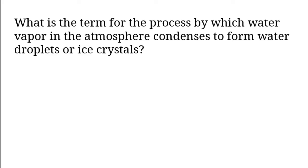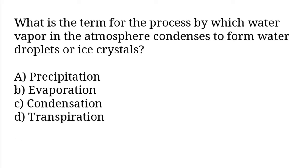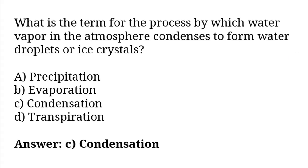What is the term for the process by which water vapor in the atmosphere condenses to form water droplets or ice crystals? Options: Precipitation, evaporation, condensation, transpiration. So the correct answer is option C. Condensation.